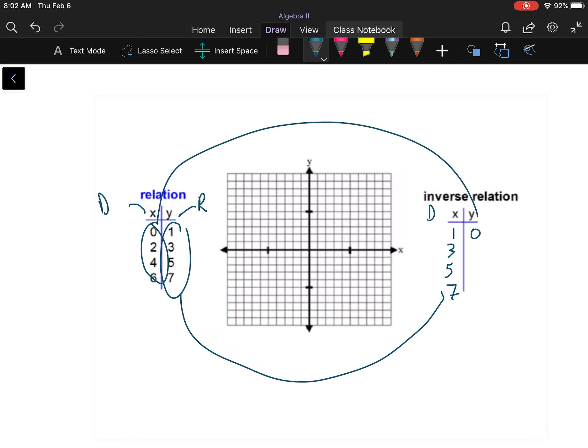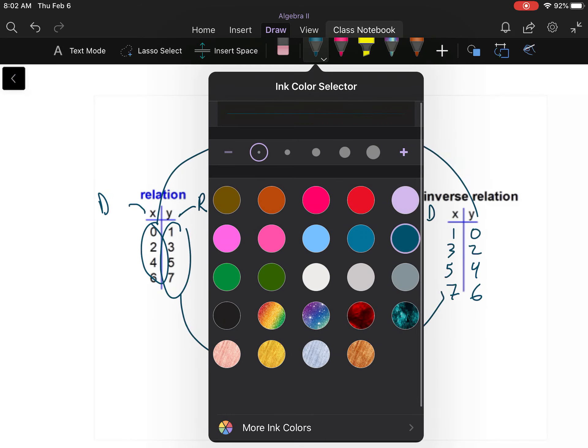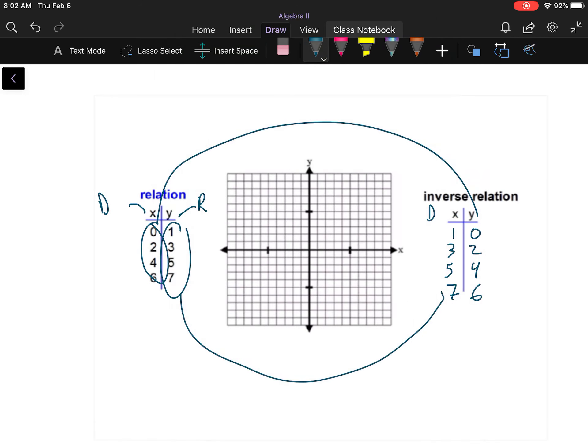I'm going to color code this a little bit. I'm going to graph these ordered pairs, these points. I'm going to pretend like this is a table to graph. So we've got 0, 1 right here. We've got 2, 3, 4, 5. I've got 6, 7 right about there, and there's my points for all those.